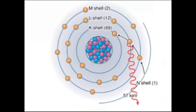An electron transition from the L-shell to the K-shell will always produce a 57 keV energy photon in a tungsten target.